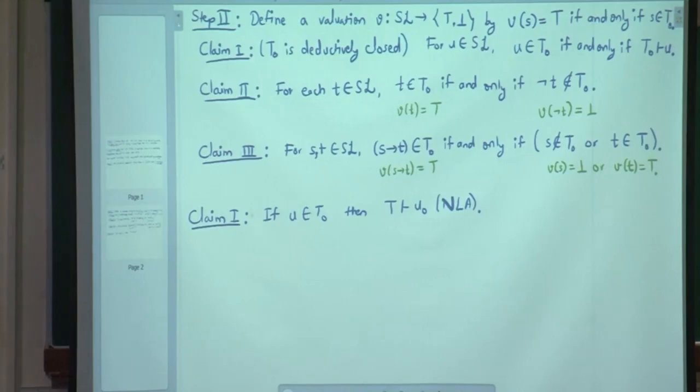If U belongs to T0, then T0 proves U — it's just a one-step proof by NLA. Now the converse is what we are looking for. That is the definition of being deductively closed: whatever you can deduce from it, it is already included. So this is our direct implication, and for the reverse implication, we have to do some work.